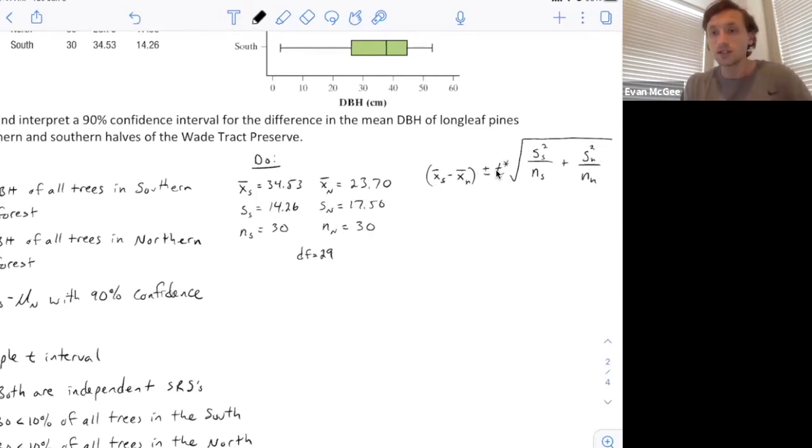The formula for the interval is the difference between the two sample means plus or minus the critical value times the standard error, which is the square root of s₁²/n₁ + s₂²/n₂ for both samples. To find my critical value, I'll use degrees of freedom of 29 because my sample sizes are both 30, so 30 minus 1 gives us 29. My point estimate is subtracting the sample means, and I chose the south first.